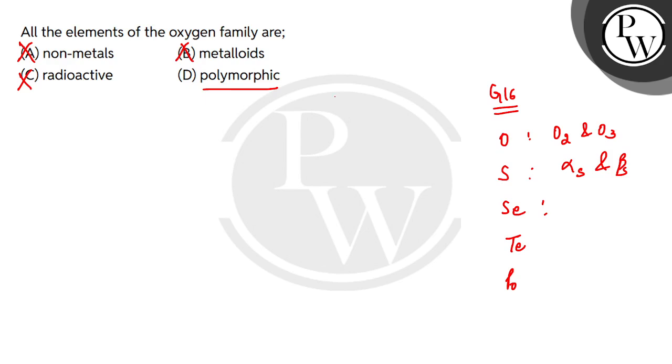So selenium can show polymorphism. Similarly, if you talk about tellurium, then both alpha and beta form will show metallic character. So tellurium also the same situation, in tellurium there is polymorphism. These all elements are polymorphic. So these are the different types of crystalline structures, different crystalline forms exist. So D option correct.